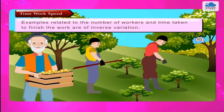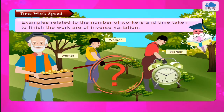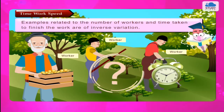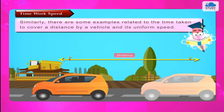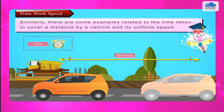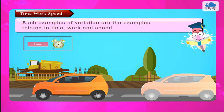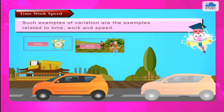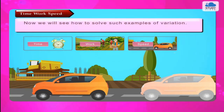Examples related to the number of workers and time taken to finish the work are of inverse variation. Similarly, there are examples related to the time taken to cover a distance by a vehicle and its uniform speed. Such examples are related to time, work, and speed. Now we will see how to solve such examples of variation.